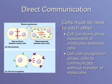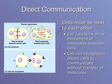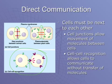First we have direct communication, and this is when cells are actually right next to one another. There can be little junctions between the cell membranes that allow molecules to pass directly from one cell to another, which we see in a lot of tissues. It can also be cell-cell recognition, where one cell has a receptor molecule and another cell has a kind of switch that fits into that receptor — like a lock and key — allowing a signal to pass from cell A to cell B.